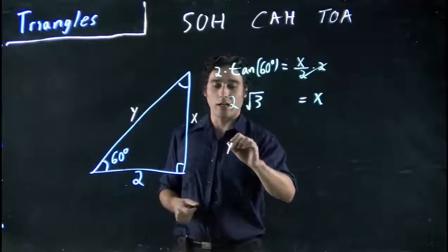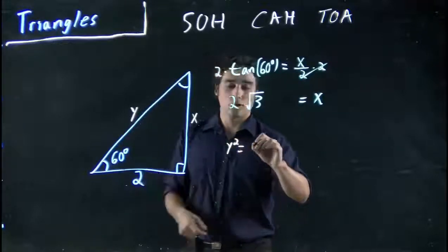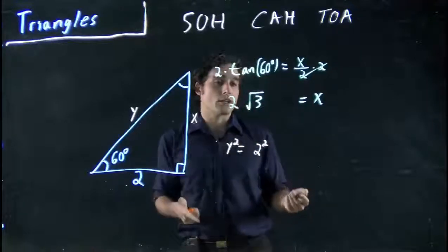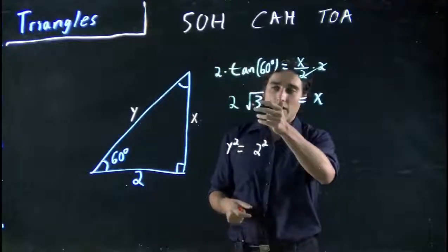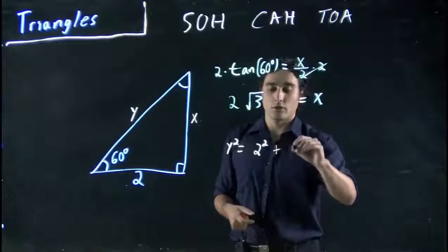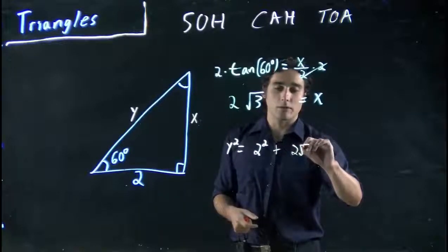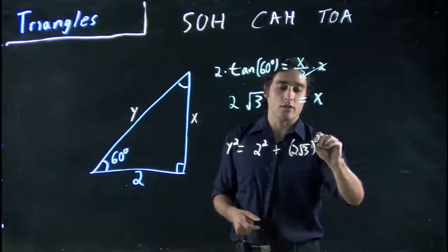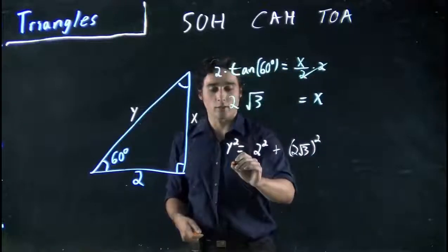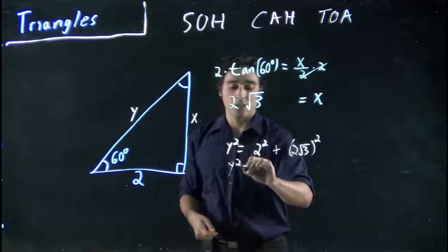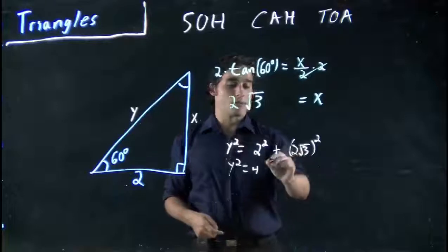So we know Y squared is equal to 2 squared plus X squared. And we know X is actually 2 times square root of 3, so all that's squared. Great, so what is Y equal to?